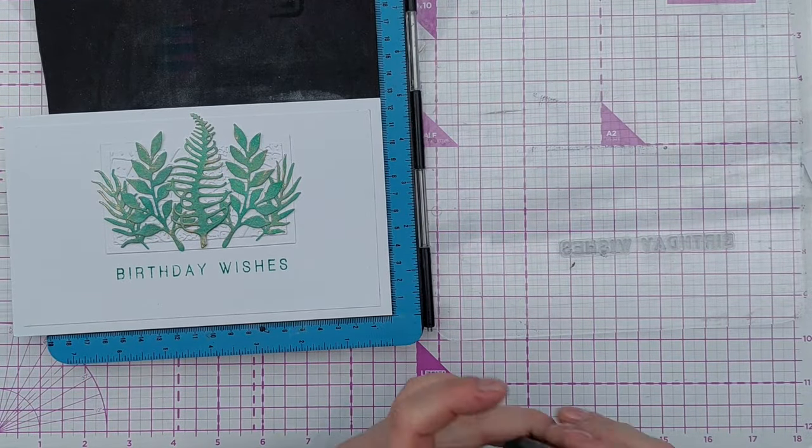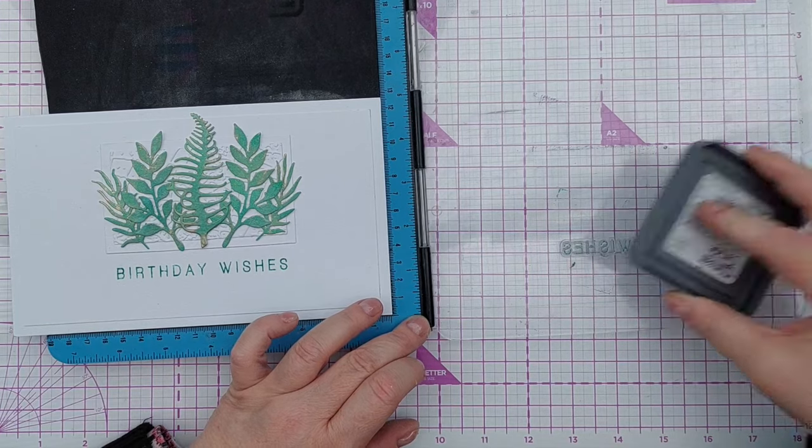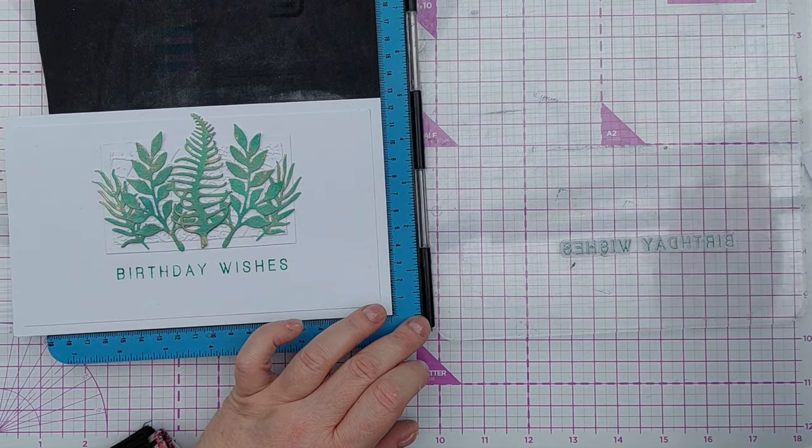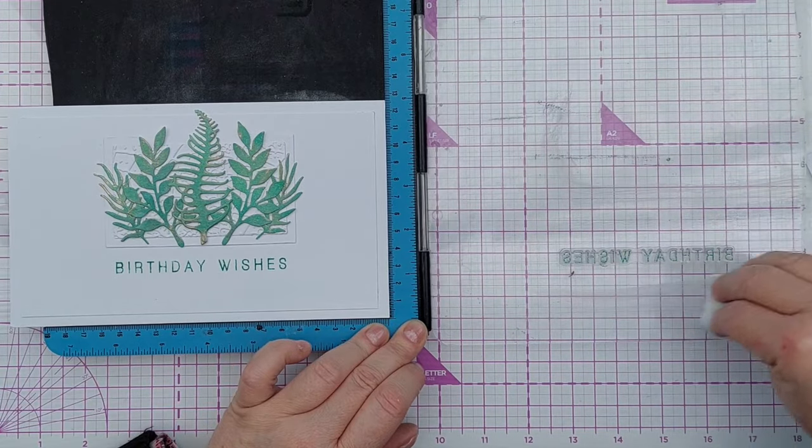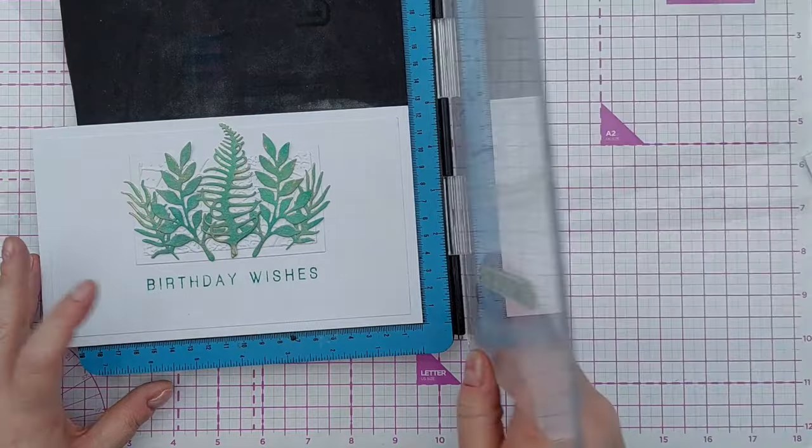Just hold that gently down to allow the ink to transfer. I'm going to do that again. This is a silicon stamp rather than photopolymer so sometimes they need a little bit of extra help because they don't necessarily take the ink very well.